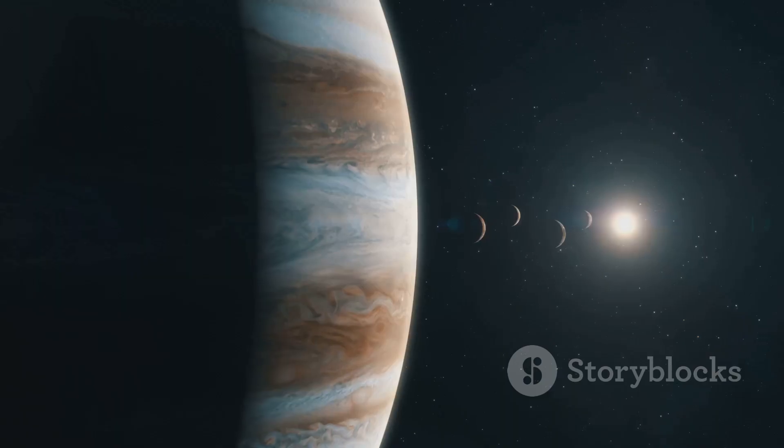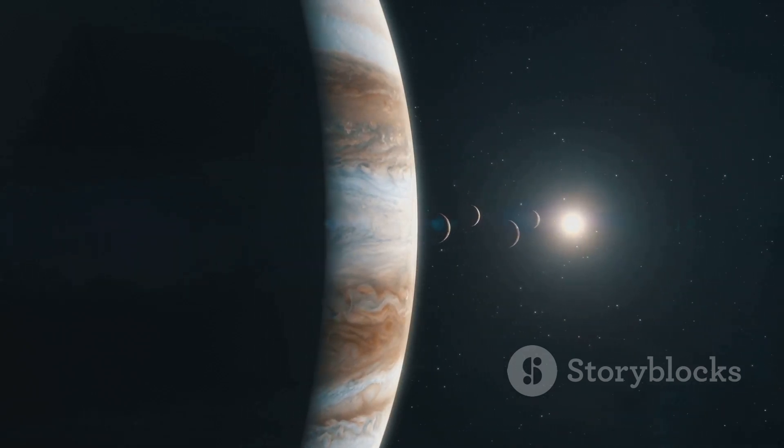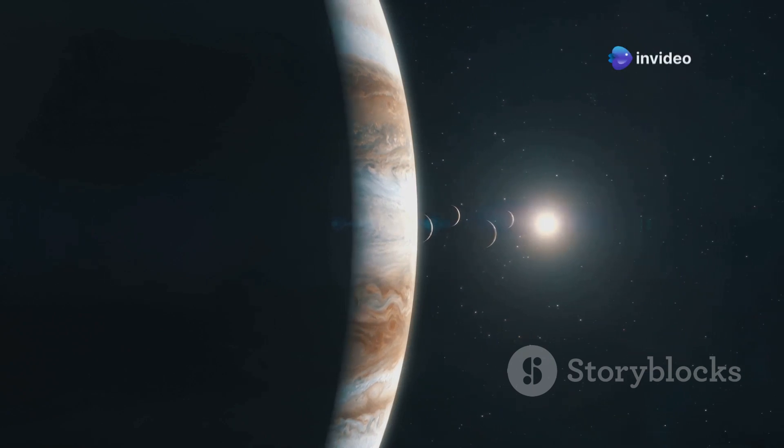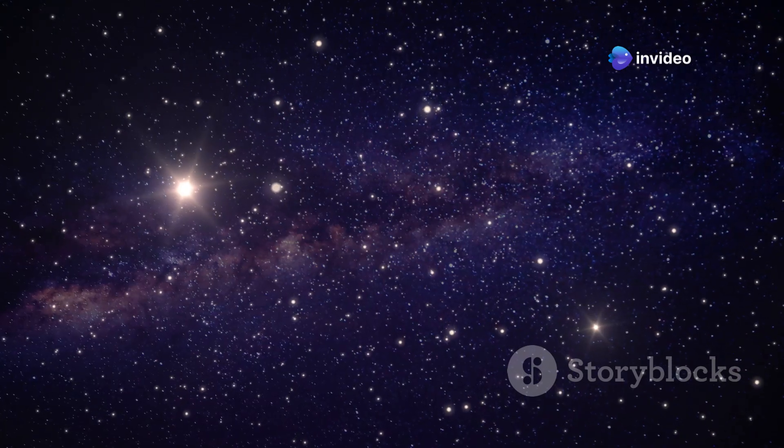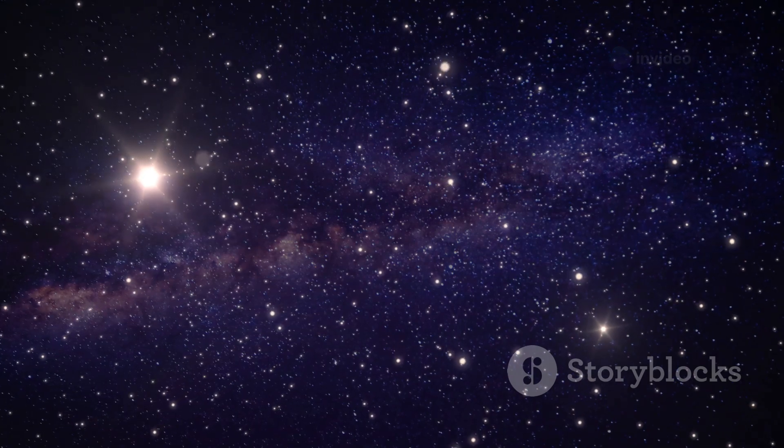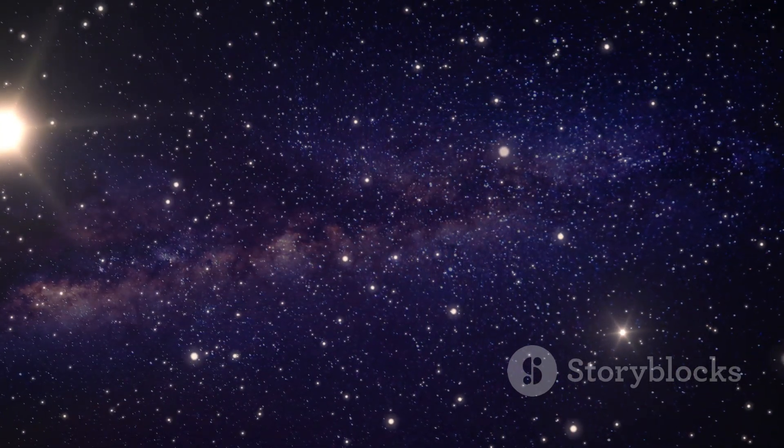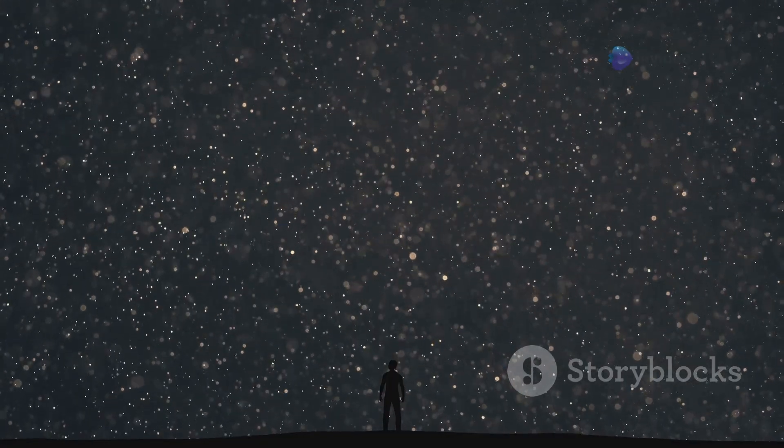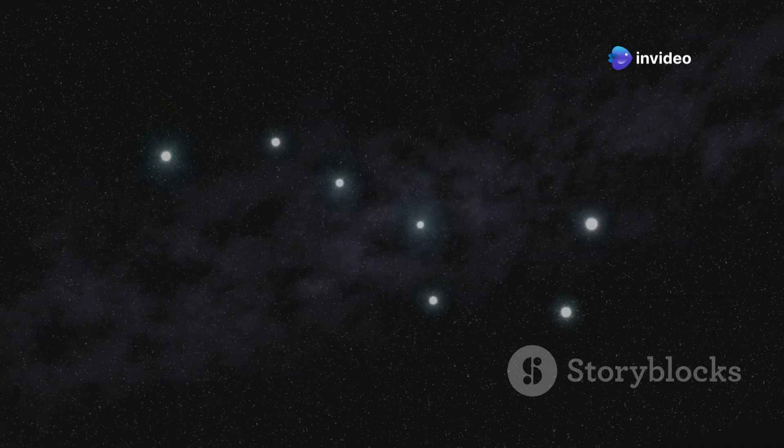If we swapped out the sun for VY Canis Majoris, it would engulf all the inner planets and even reach out past Jupiter. The sheer scale of this star is almost incomprehensible. Imagine looking up at the night sky and seeing a star that large. It would dominate the sky, casting a reddish glow over everything. It would be a truly awe-inspiring sight, a reminder of the vastness and beauty of the cosmos.